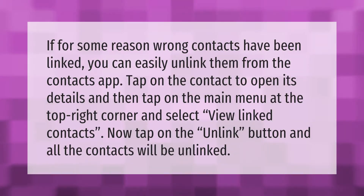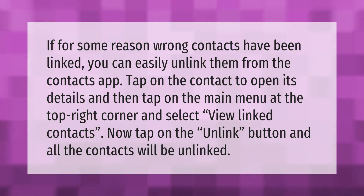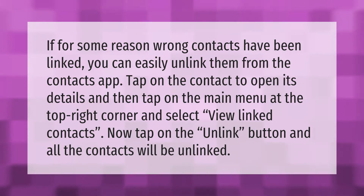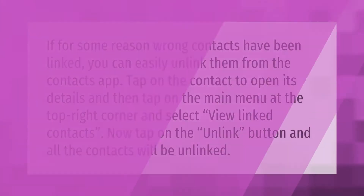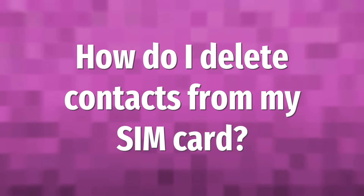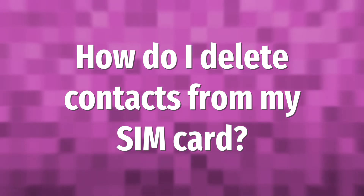If for some reason wrong contacts have been linked, you can easily unlink them from the contacts app. Tap on the contact to open its details, then tap on the main menu at the top right corner and select view linked contacts. Now tap on the unlink button and all the contacts will be unlinked.